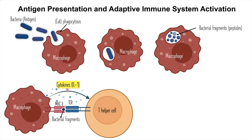Interleukin-1 will stimulate the T-helper cell, but for the T-helper cell to reach full activation, it needs a second signal. The second signal happens when the CD28 receptor on the T-helper cell attaches to the B7 protein on the macrophage. At this moment, the T-helper cell is fully activated.